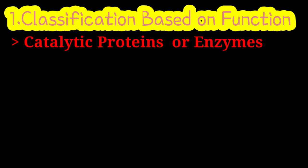Catalytic proteins, or enzymes, accelerate thousands of reactions. Examples include glucokinase, hexokinase, phosphofructokinase, and amylase. There are many such enzymes, and all of them come under the category of catalytic proteins.